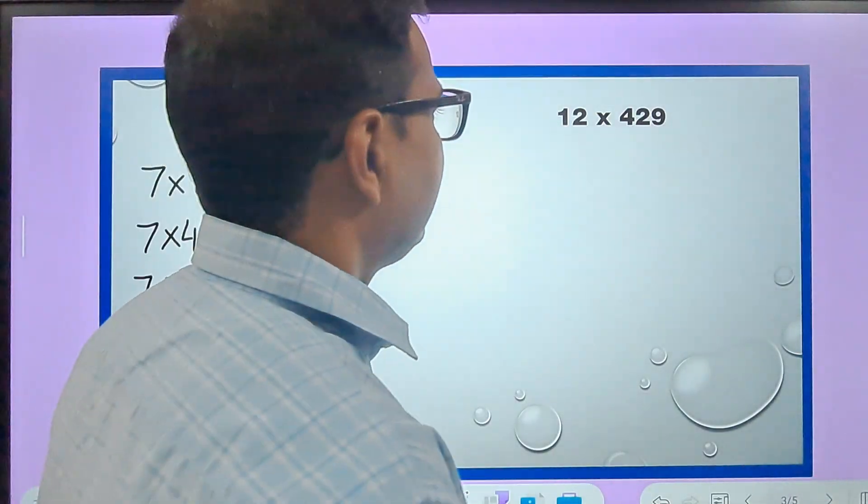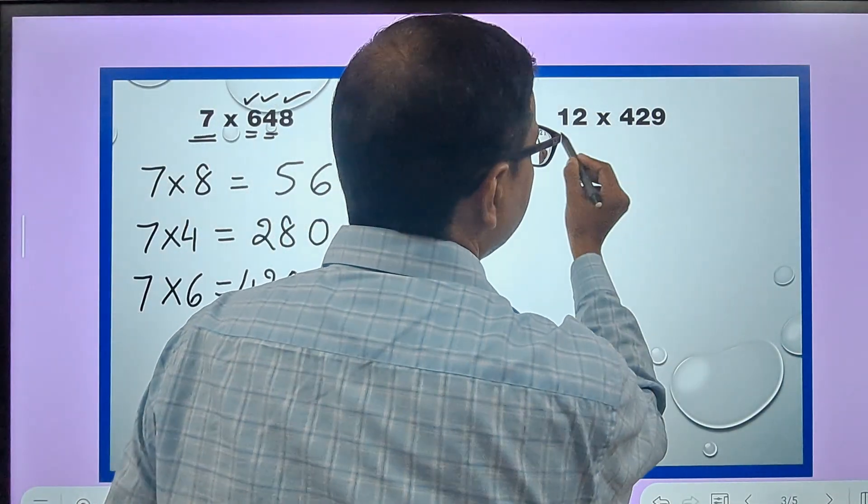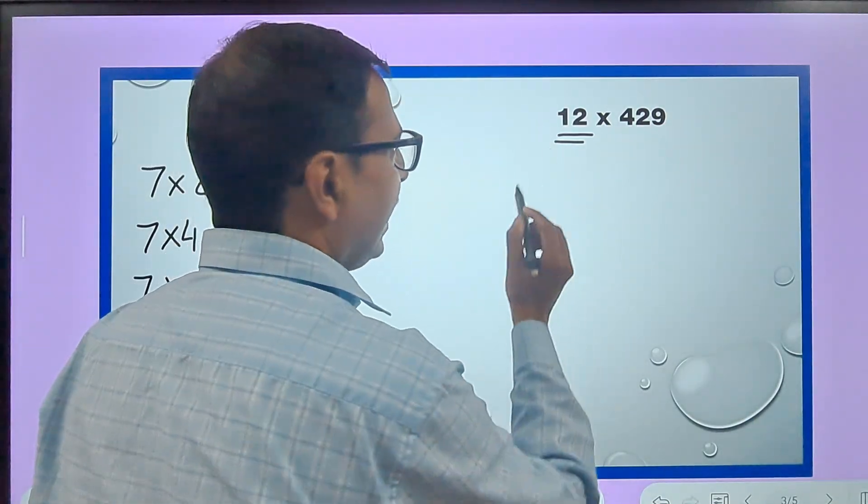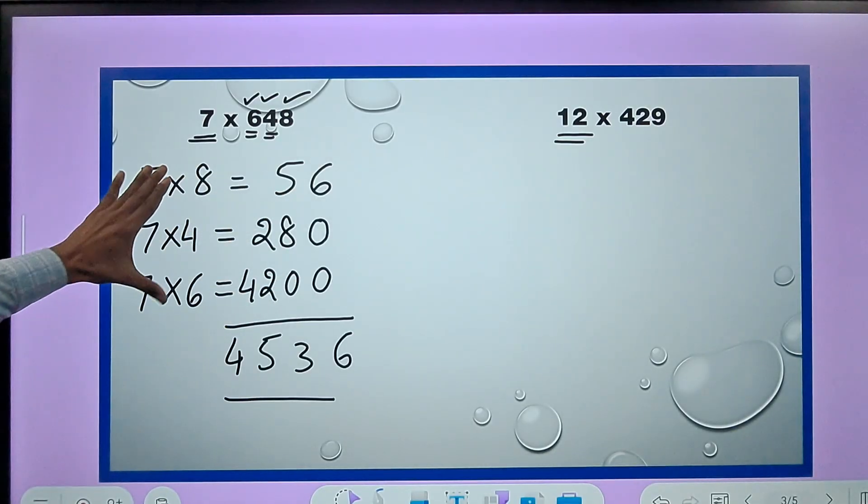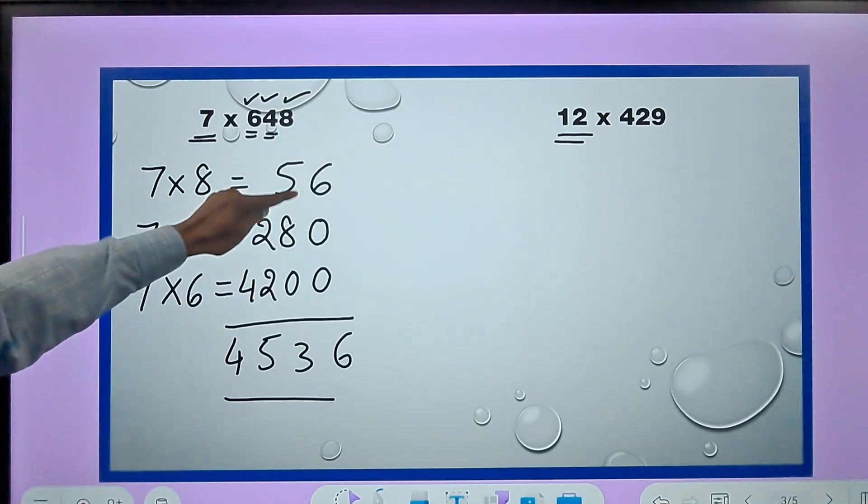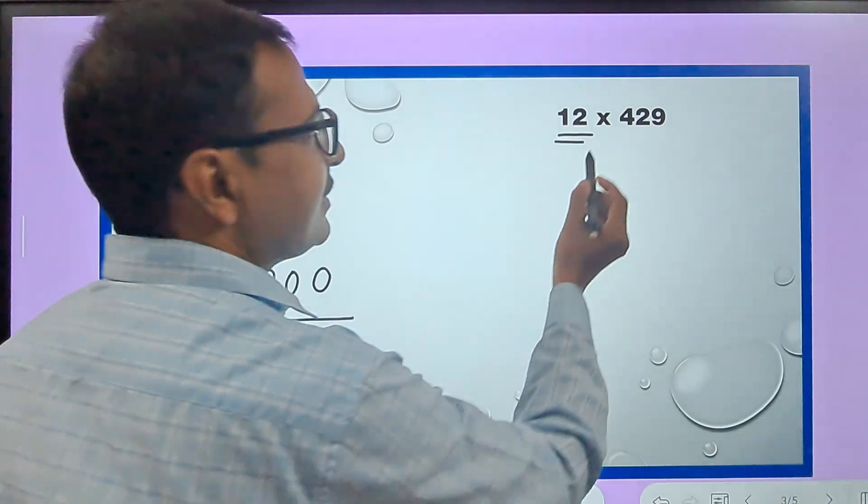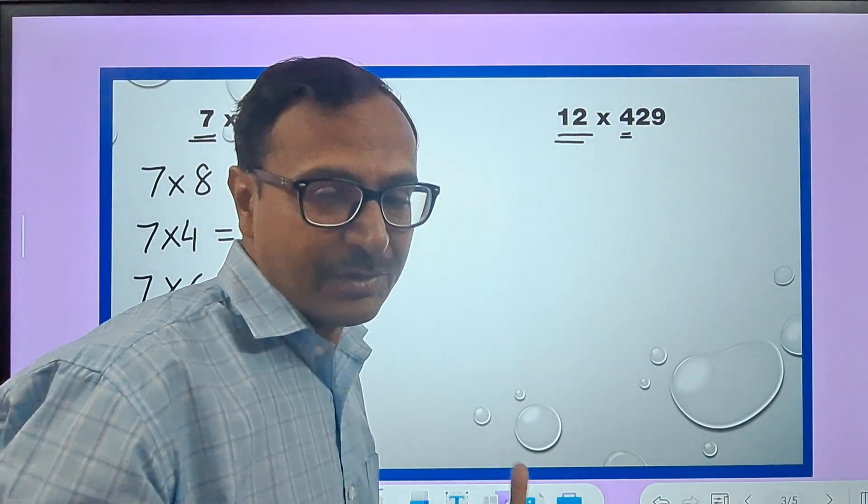Likewise, if you see here we have to multiply 429 by 12. Again, see I wrote all the products here but I will not be writing all these things now - I will write the numbers directly. I will start with the first digit because that will be the largest number which will be obtained.